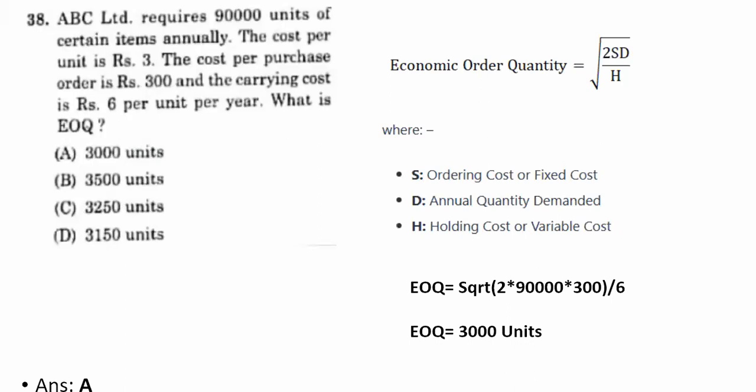Thirty-eighth question: ABC Limited requires 90,000 units annually; cost per unit is ₹3; cost per purchase order is ₹300; carrying cost is ₹6 per unit per year. Calculate EOQ. The formula is EOQ = √(2SD/H), where S is ordering cost, D is annual demand, H is holding cost. Substituting the values gives 3,000 units. The correct answer for the 38th question is A.